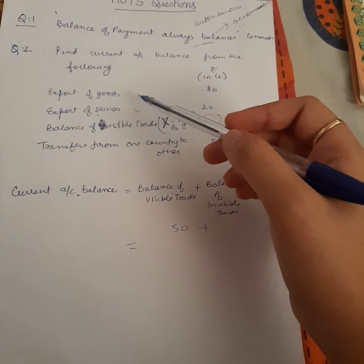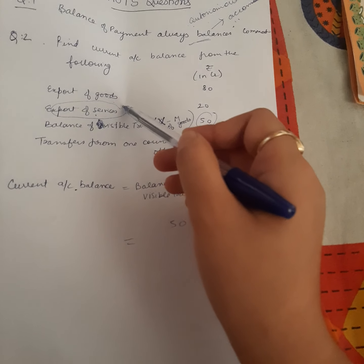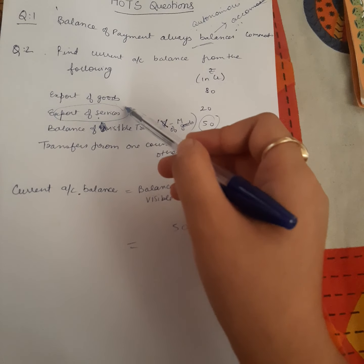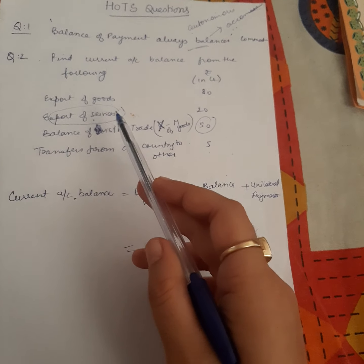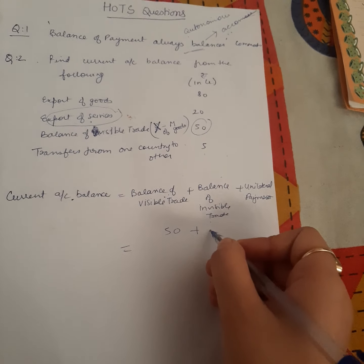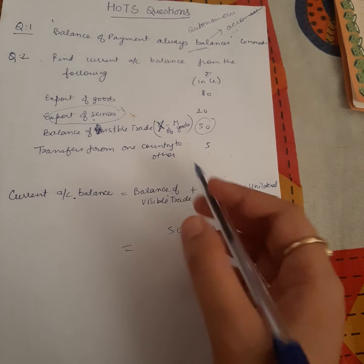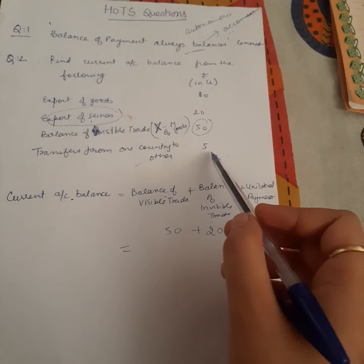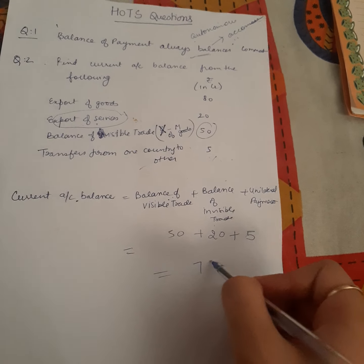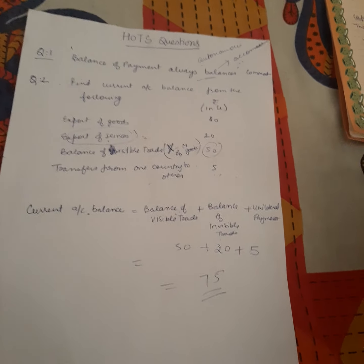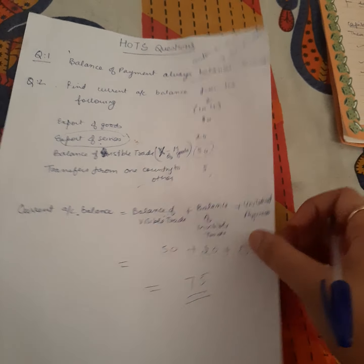We are not given balance of invisible trade separately — only export of services is given — so assuming imports of services to be 0, we take the balance to be 20. Adding unilateral payments of 5, you get 75 as your current account balance. That's all with this question.